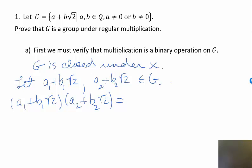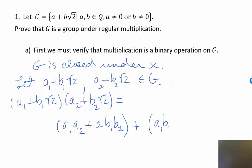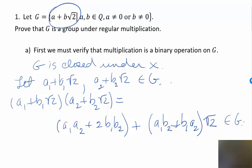Working this out, you get a₁a₂ + 2b₁b₂, which is a rational number, plus (a₁b₂ + b₁a₂)√2, where that coefficient is also a rational number. The product is of the required form, so it is an element of G. We have shown that G is closed under multiplication.